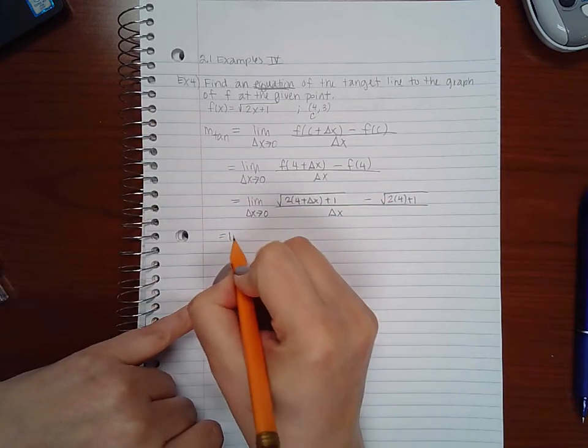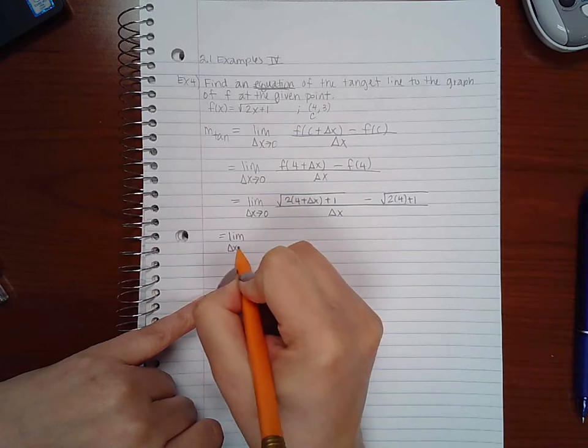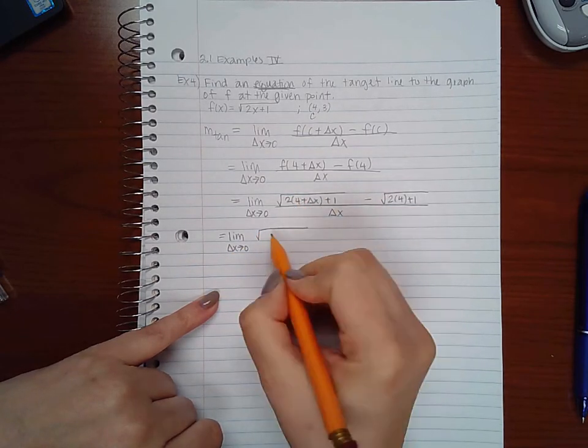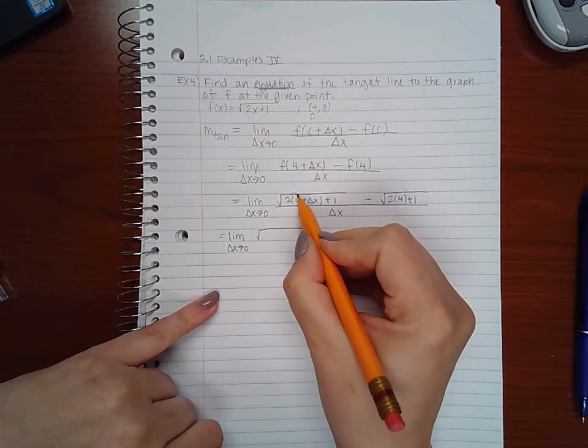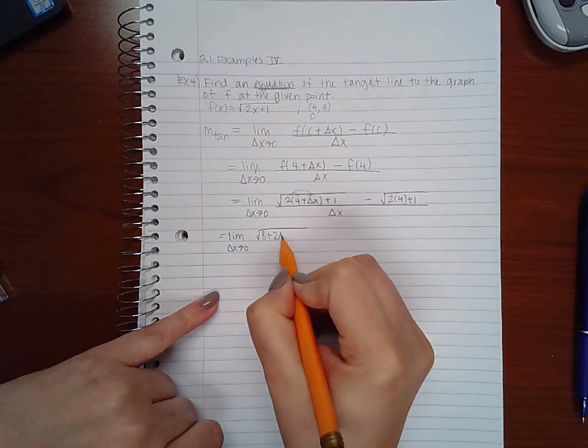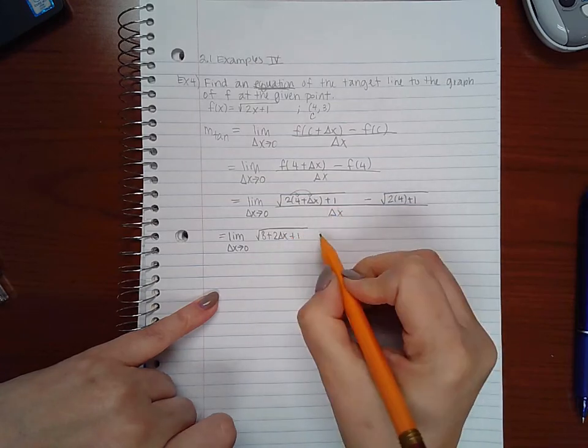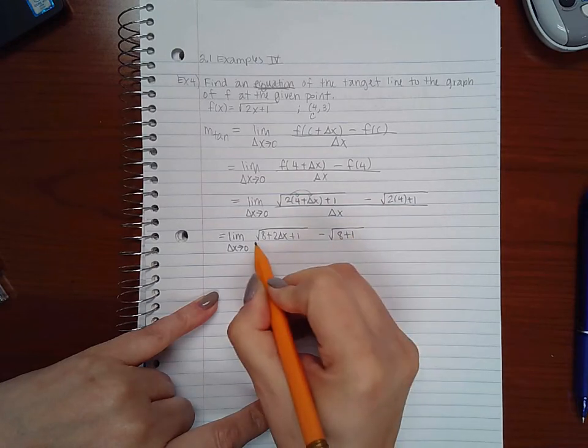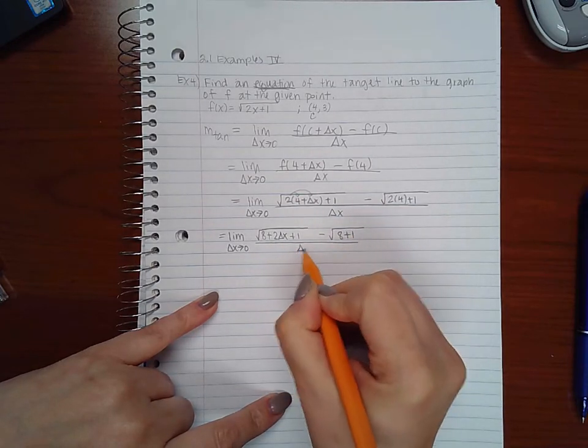Now let's simplify this just a little bit before we continue. If I distribute the two, I get eight plus two delta x plus one. Here I get eight plus one over delta x.